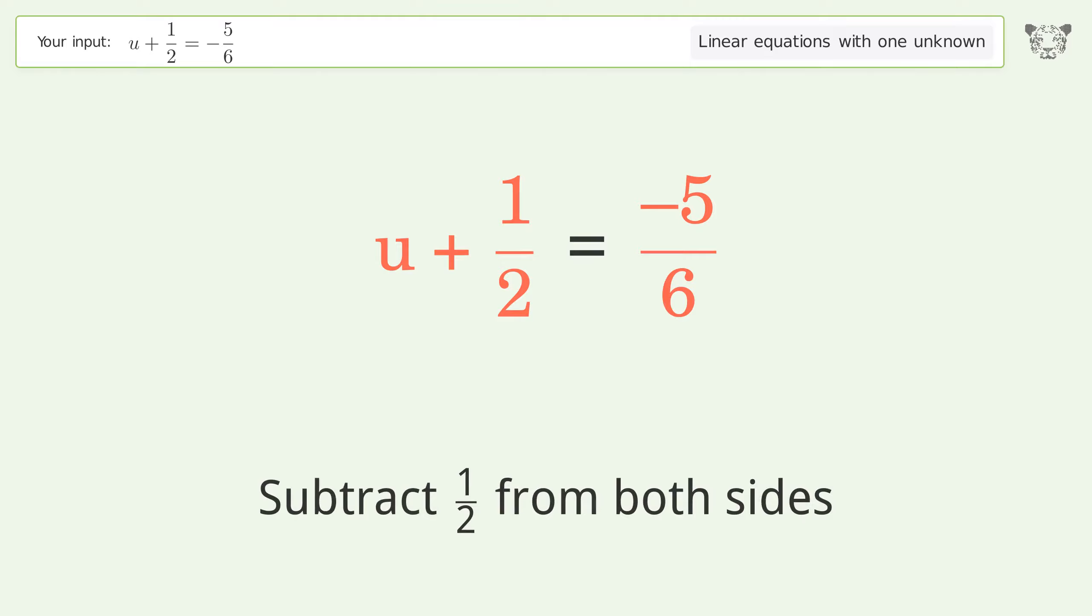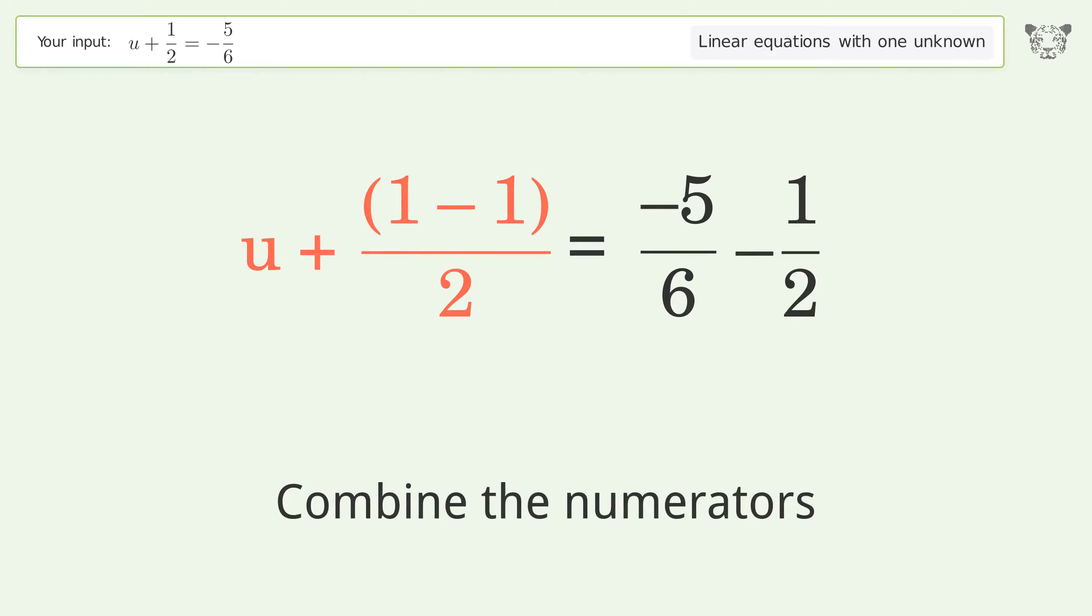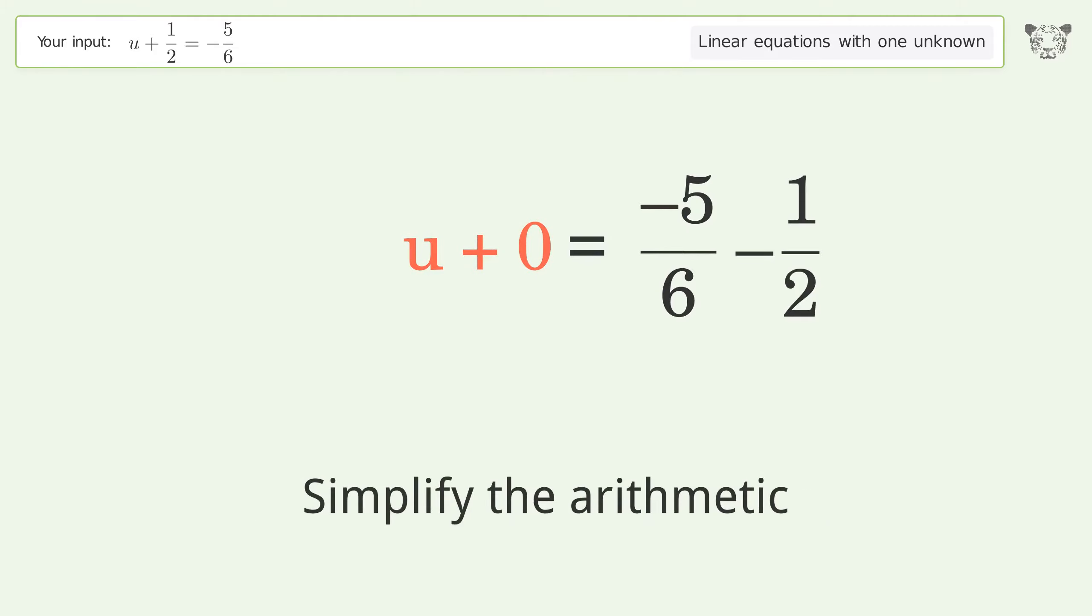Subtract 1 over 2 from both sides and combine the fractions. Combine the numerators, reduce the zero numerator, and simplify the arithmetic.